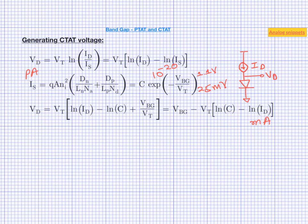So long story short, C is indeed much much bigger than ID, and hence we can say that indeed this term is a CTAT term.